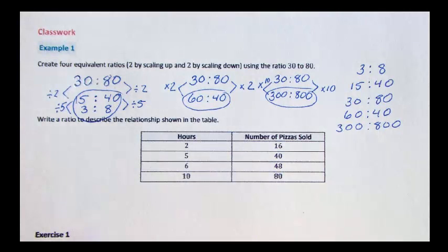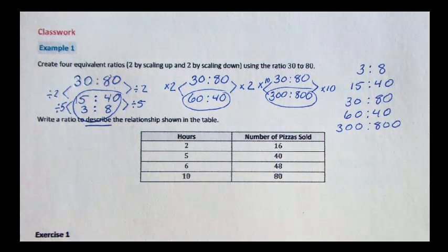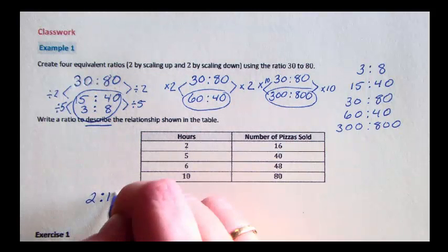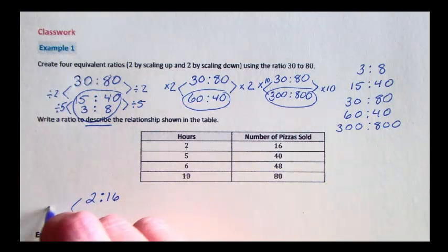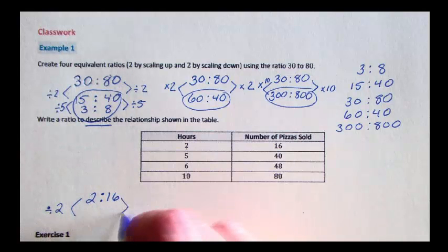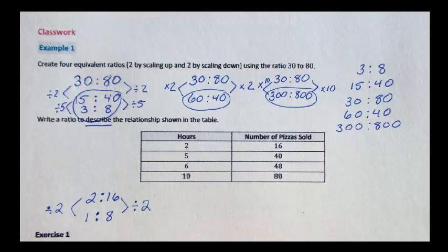Here we have a table of ratios that are all equivalent, and we want to write a ratio to describe the relationship shown in the table. We could pick any one of these, but none of them are our smallest ratio. If we take 2 and 16, this ratio can be scaled down. We can make a smaller ratio out of it. If we divide 2 and 16 by the same number, and I'm picking 2 because they're both even, we get the ratio 1 to 8. Since there's no number besides 1 that can be divided into both 1 and 8, we've found the smallest ratio.